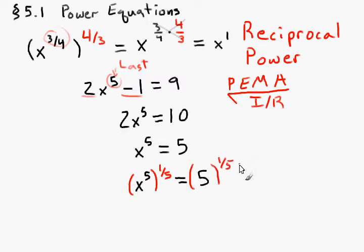So, I'm going to have x to the 5th, and I'm going to raise that to the 1 5th, the reciprocal power. And that's going to be equal to 5, again, to the 1 5th. Remember, golden rule, power. So, our solution is x is equal to 5 to the 1 5th.